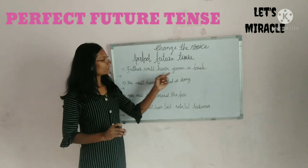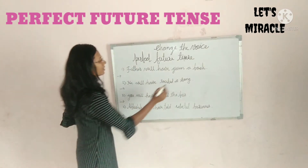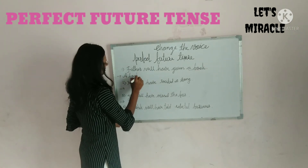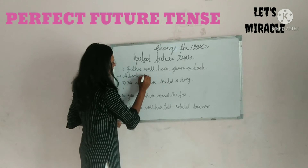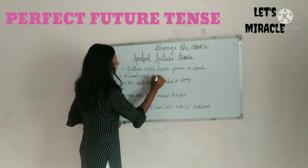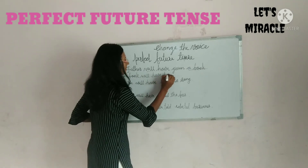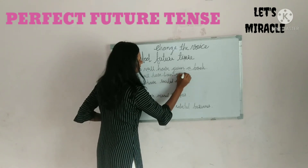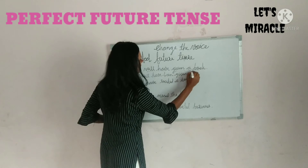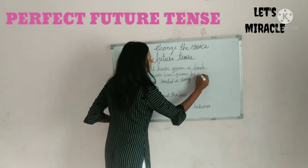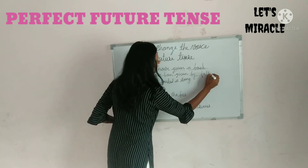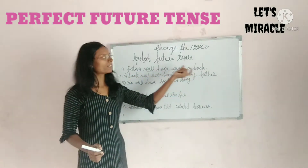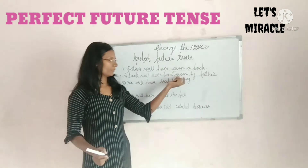Father will have given a book. This will be changed into passive voice as: a book will have been given by father. The subject 'father' remains as it is. So father will have given a book becomes a book will have been given by father.